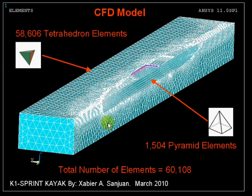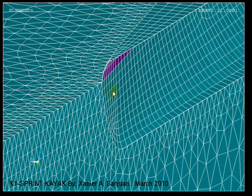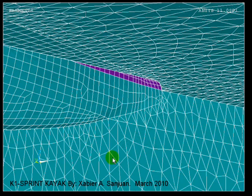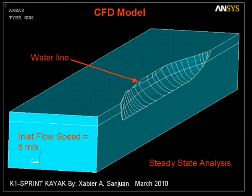The pyramid elements are required to interface with the tetrahedrons that make up the volume of the water. At the bow of the kayak you can see the quadrilateral bases of those pyramid elements, and then tetrahedrons all around. In the same way at the stern, you have the interface with mostly pyramid elements and tetrahedrons around.